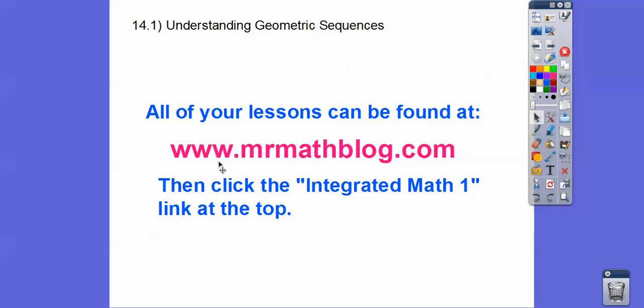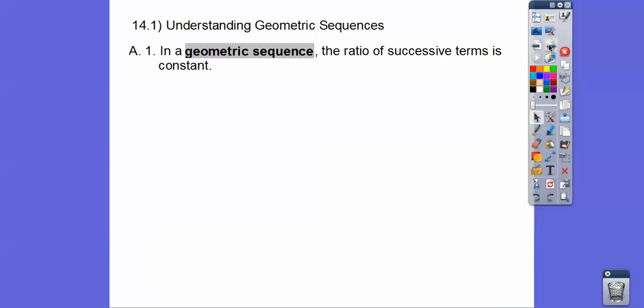Don't forget all your lessons can be found at MrMathBlog.com, and this is an integrated Math 1 class. So in a geometric sequence, the ratio of two successive terms is constant.